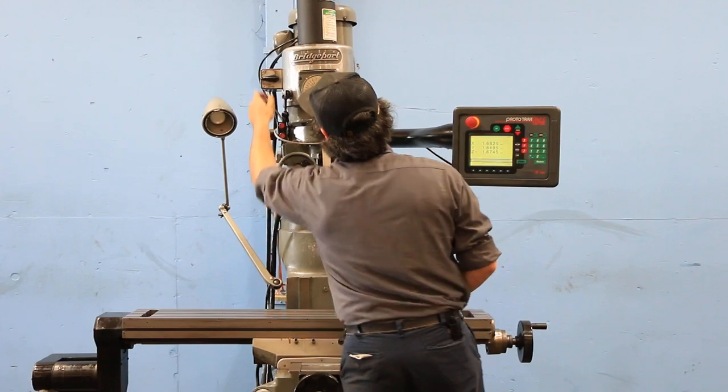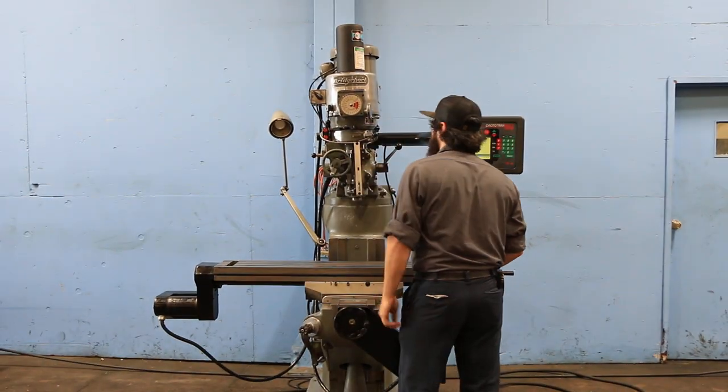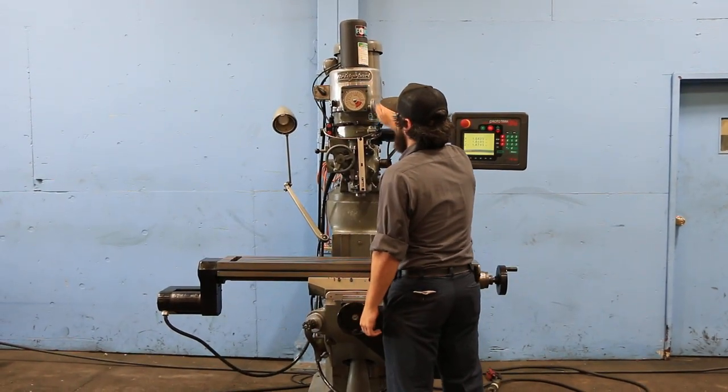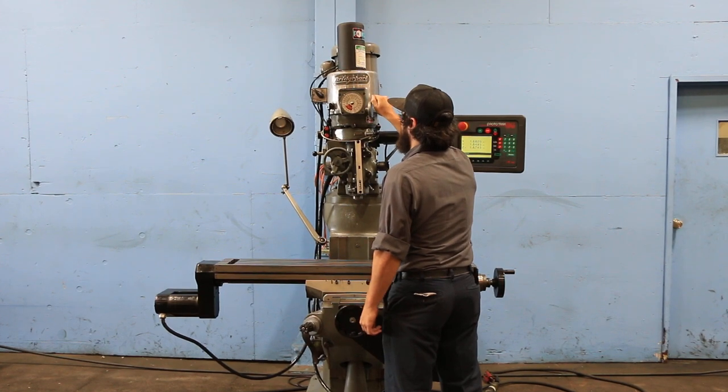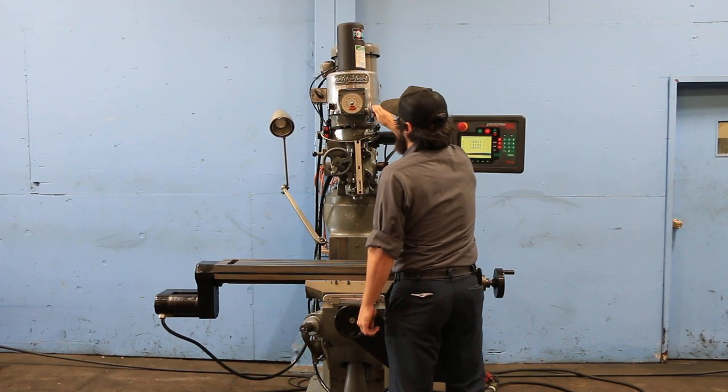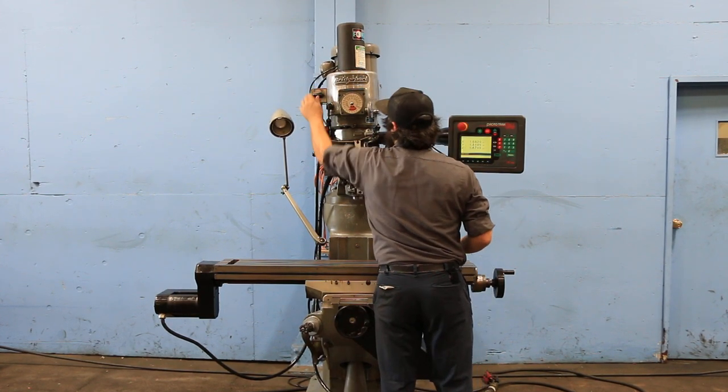It's got a three axis digital readout, two axis control. It's running the head, it's very quiet, it's an R8 spindle, you have a 9x48 table.